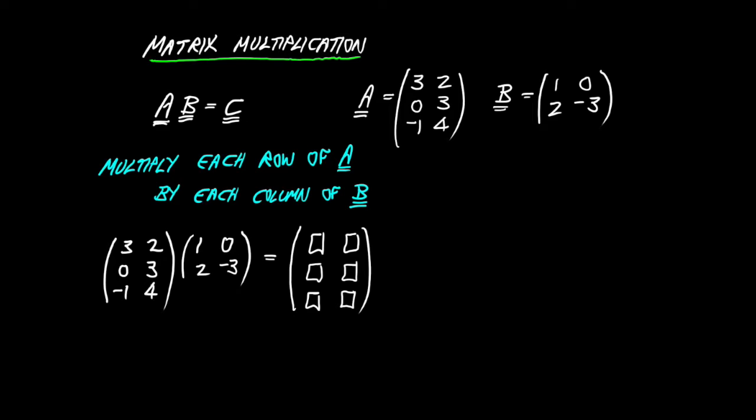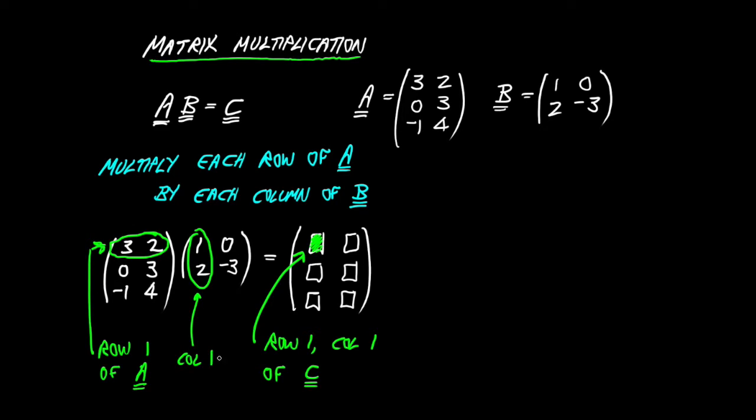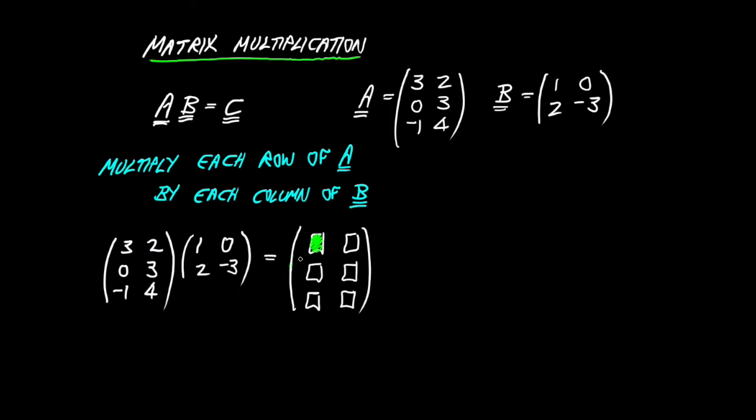The question is how to work out each of these numbers. Let's choose this one first. Now notice this guy's address, if you like, is row one, column one of the output matrix C. I'm going to need to, in order to work this guy out, I'll need to look at the whole of row one in the first matrix, in matrix A, and the whole of column one in the matrix B. I'll need to combine those guys. And how do I combine them? I just multiply element by element as I go along the row and down the column. So three times one just gives me three, and then I add on the next combination, two times two is four. So three plus four is going to give me seven.